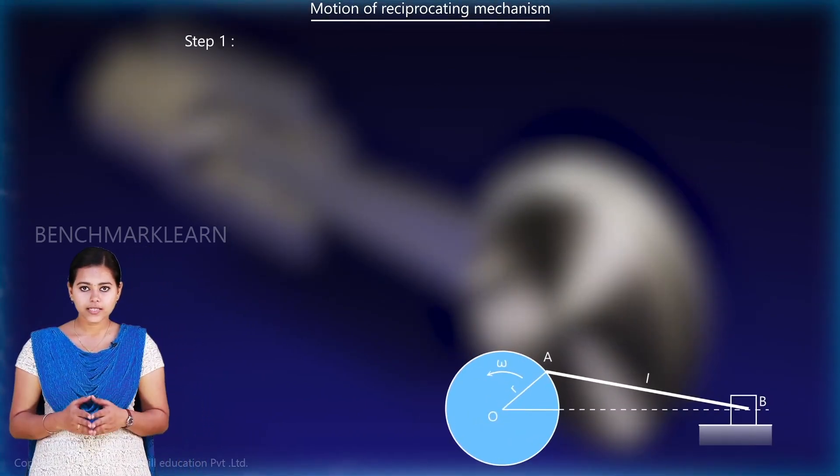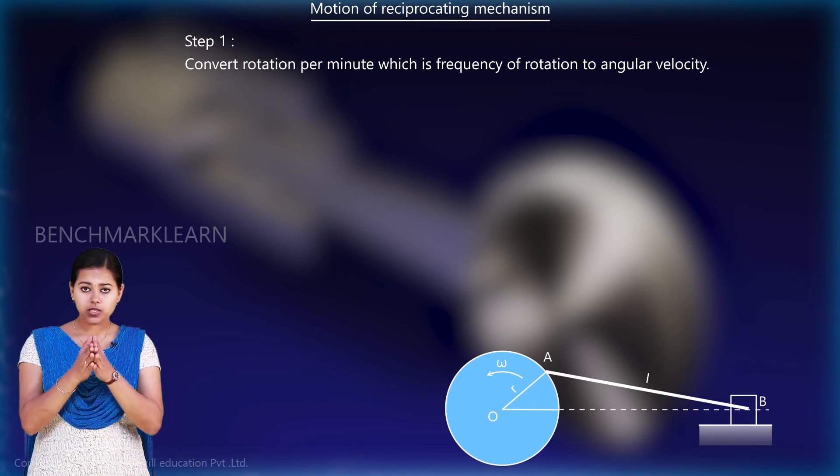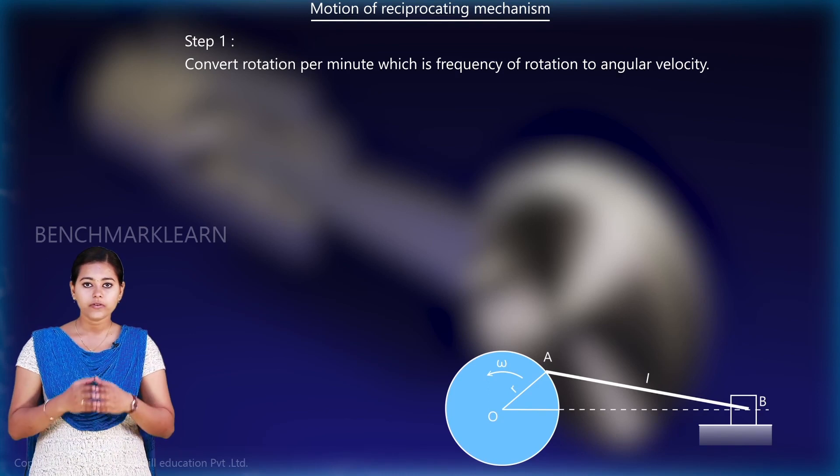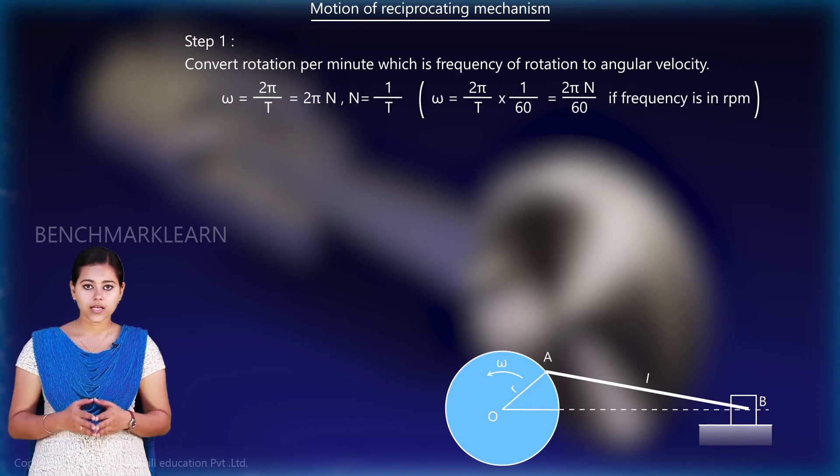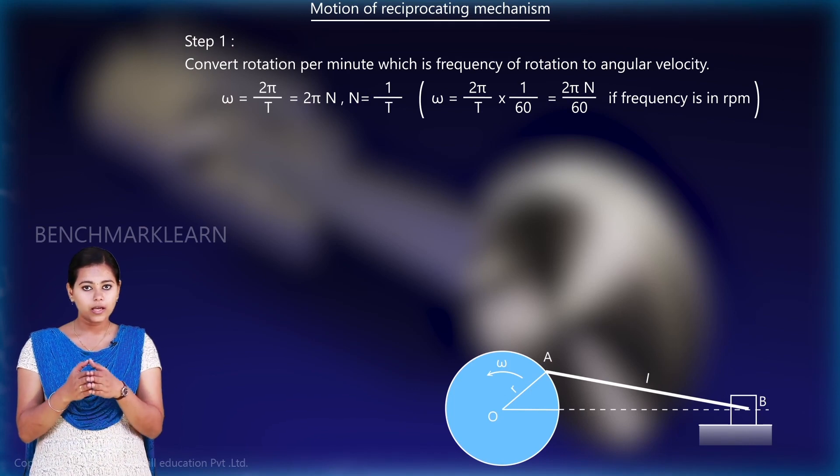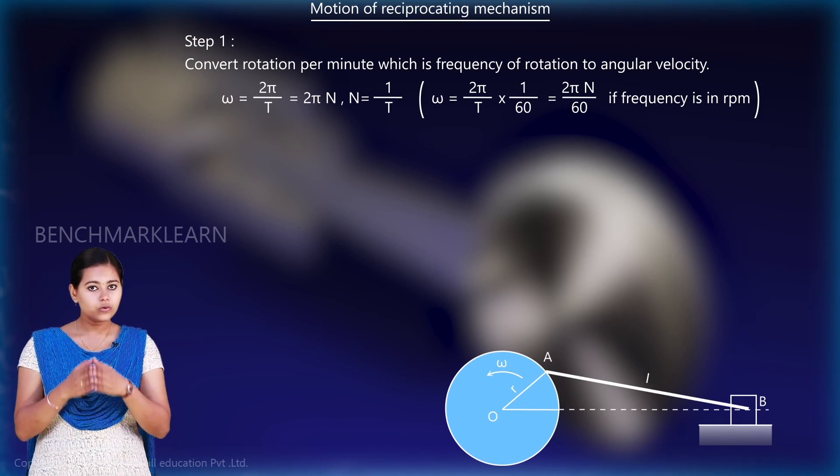In the first step, we convert the rotations per minute, which is the frequency of rotation, to angular velocity. It is given by the equation ω = 2π/t, which is equal to 2πN, where N = 1/t.